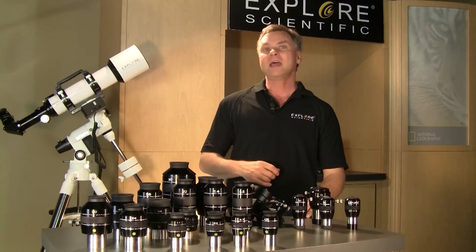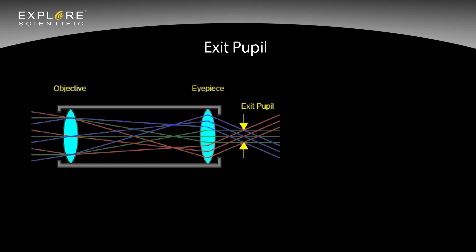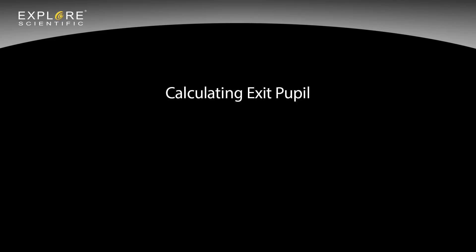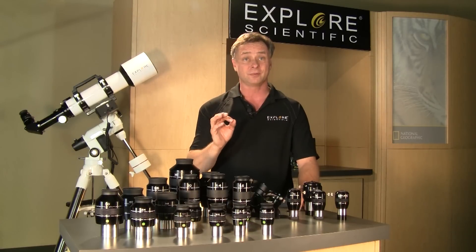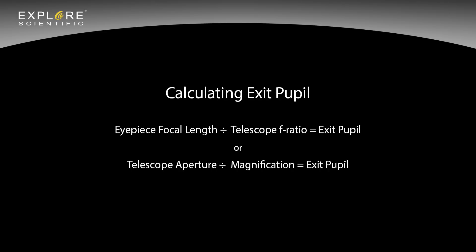Now we'll discuss exit pupil. Every telescope and eyepiece combination will produce an exit pupil — it's the focused beam of light where the image is viewed. The diameter of the exit pupil changes with magnification: lower magnifications produce a larger exit pupil giving a brighter image, while higher magnifications produce a smaller exit pupil with less image brightness. The formula: take the eyepiece focal length in millimeters and divide it by the telescope f-ratio. Or take the telescope aperture in millimeters and divide it by magnification. Both results are in millimeters.